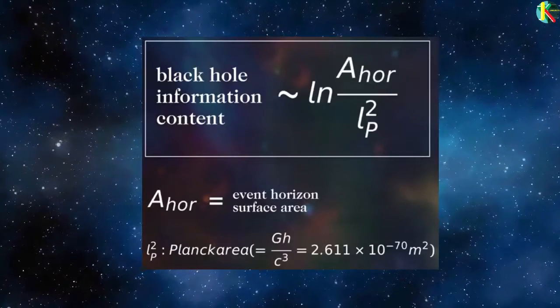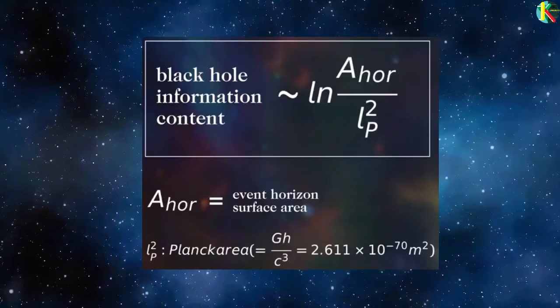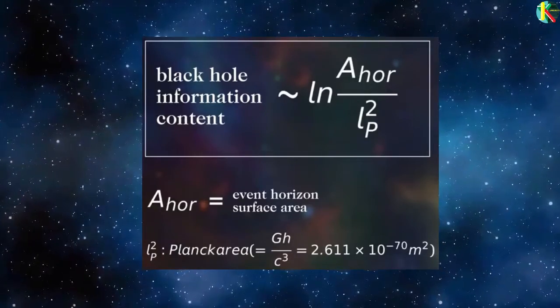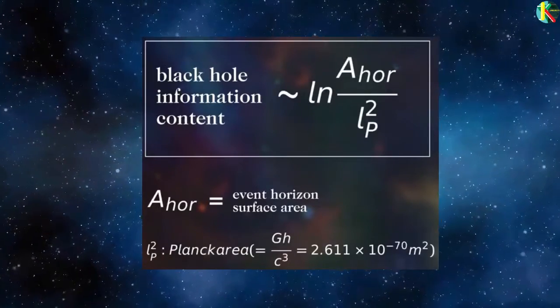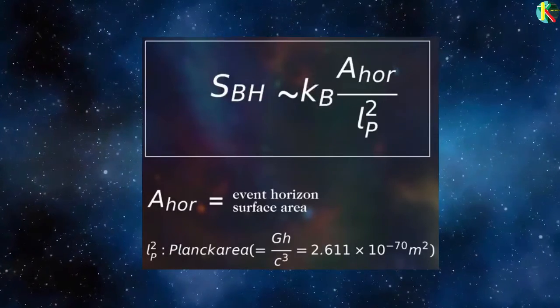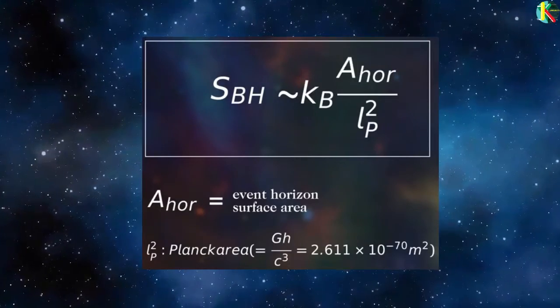In fact, the information content is very close to that surface area defined by the number of Planck areas. Now, just by multiplying that information content by the Boltzmann constant, we have the entropy of a black hole which is going to be directly proportional to the surface area of the event horizon.